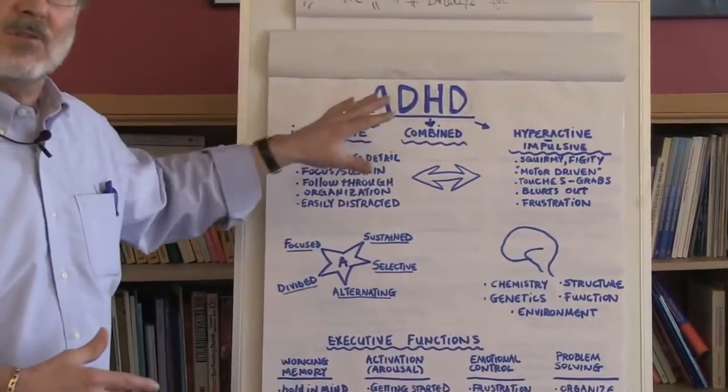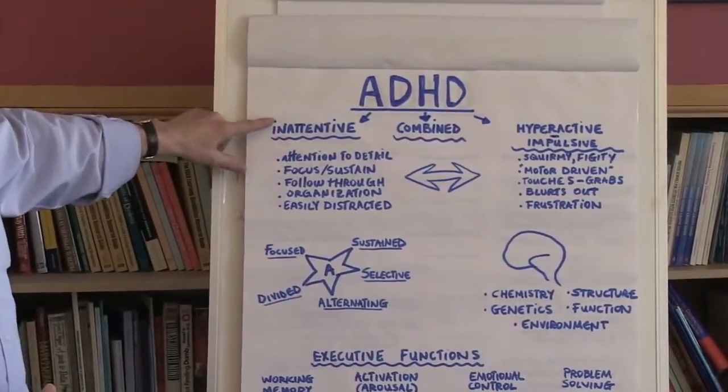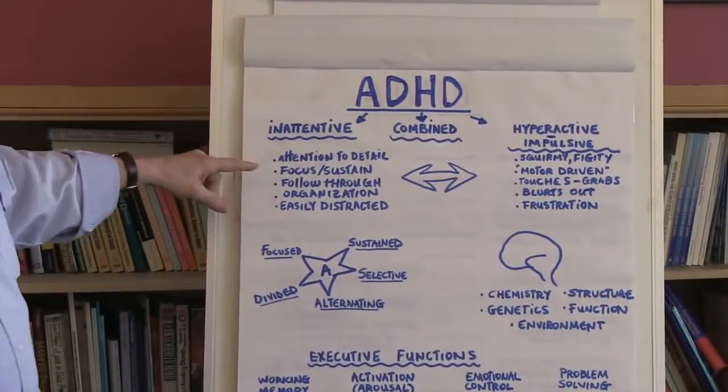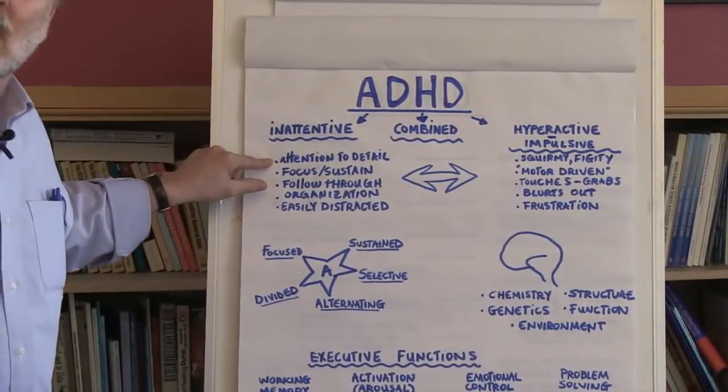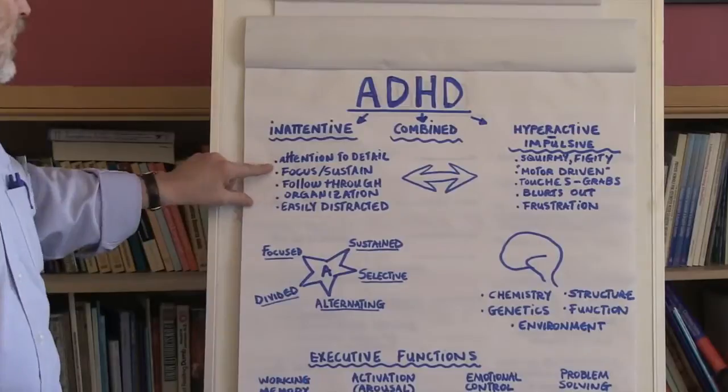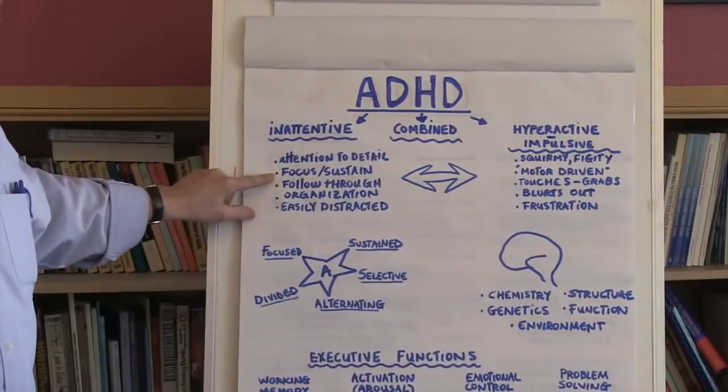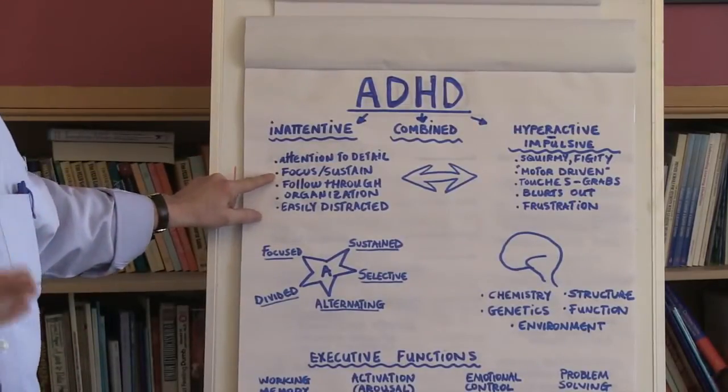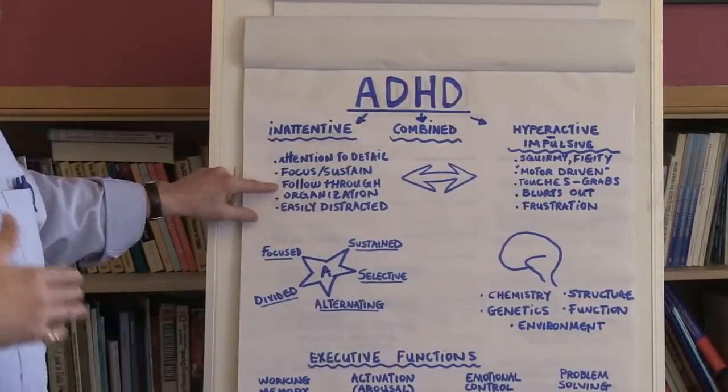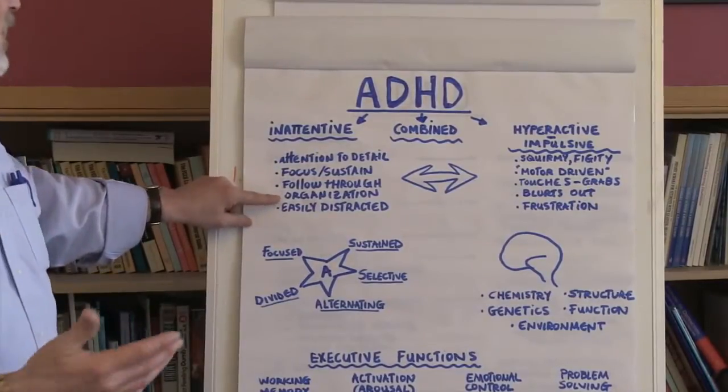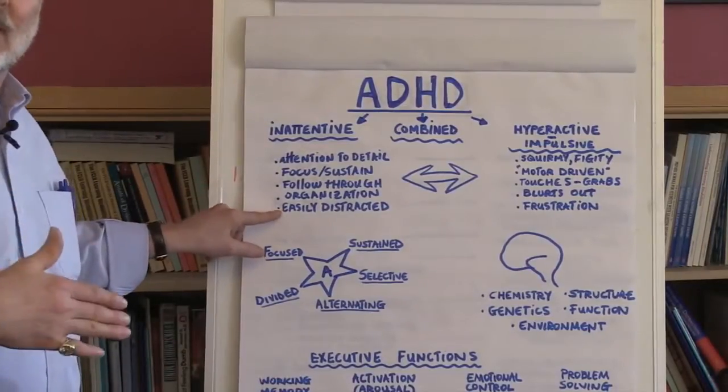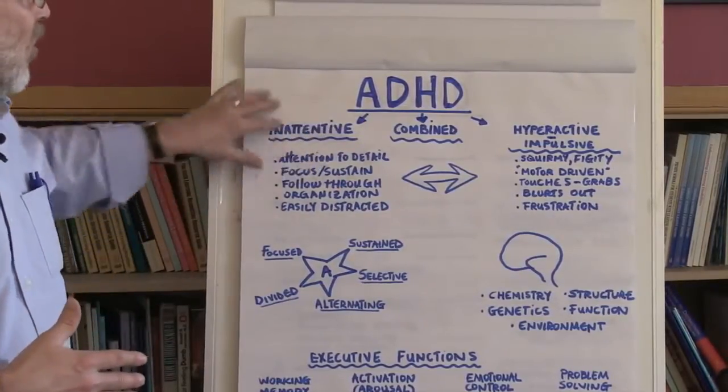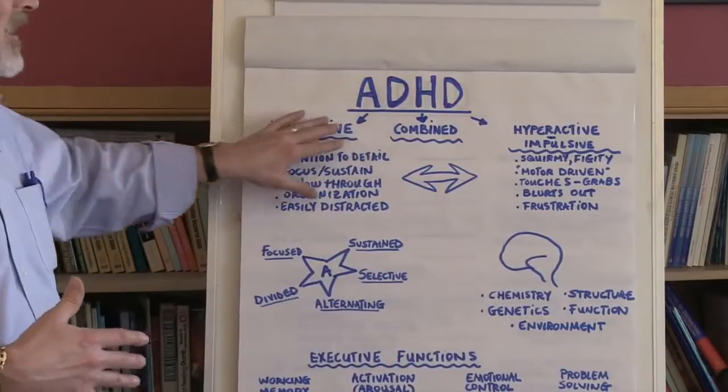The inattentive ADHD type often manifests itself in a child having difficulty paying attention. Sometimes they pay attention, but the focus is off, or they can't sustain attention for very long. They have difficulty following through with activities, they're not particularly well organized, and they're easily distracted. That's really the hallmark of ADHD inattentive type.